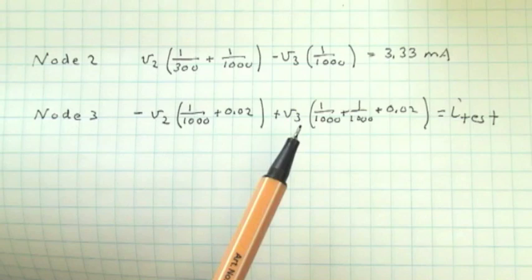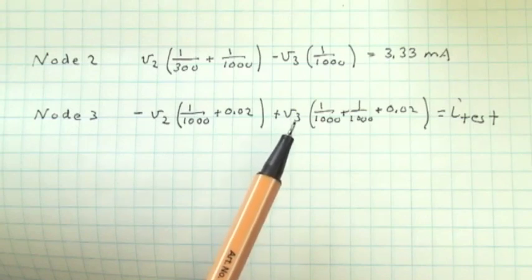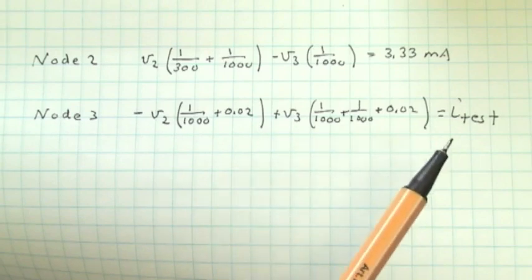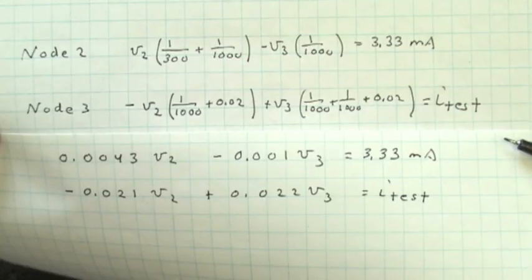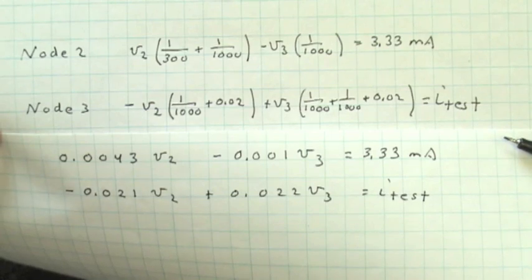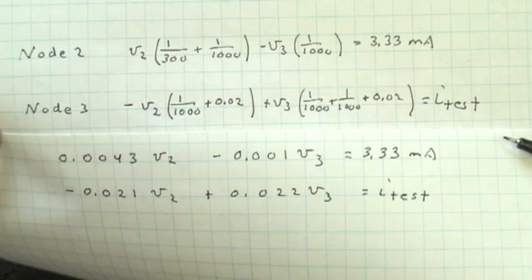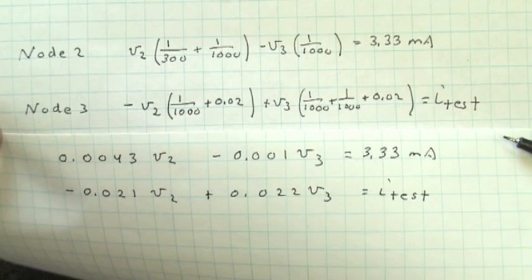Remember that we want to seek a relationship between the output voltage V, which is V sub three, that node voltage and the test current. And if we add those fractions within the parentheses, we can say 0.0043 V2 minus 0.001 V3 is equal to 3.33 milliamps. And minus 0.021 V2 plus 0.022 V3 is equal to I test.